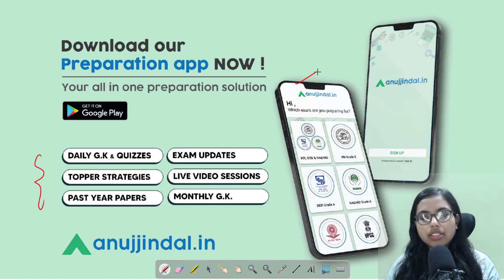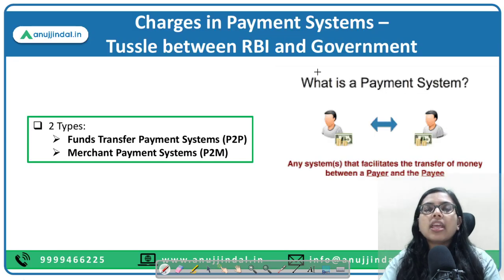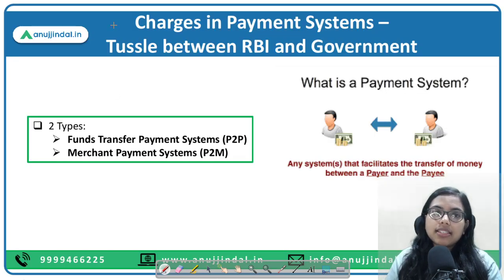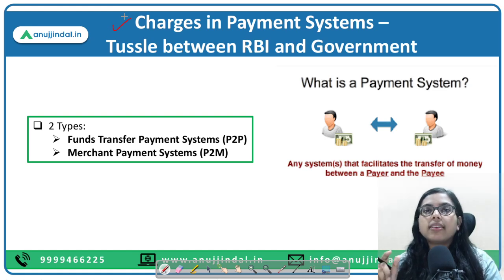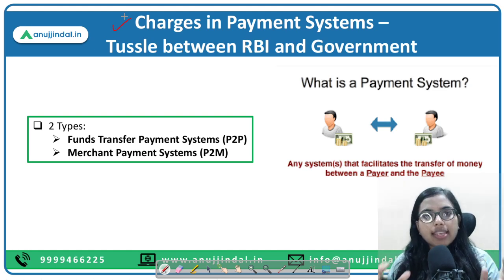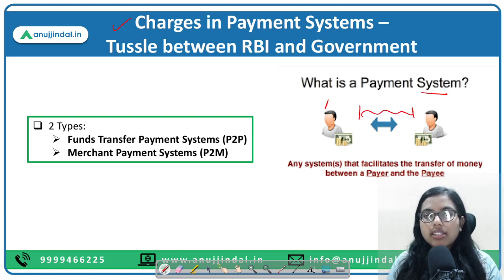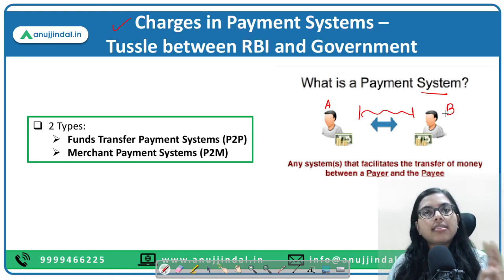Let's get started with charges in payment systems and the tussle between RBI and the government. First, let's understand charges — we want to associate a cost with the payment system. A payment system is anything that facilitates the transfer of money. If any system facilitates the transfer of funds so that you can transfer from A to B, that is known as the payment system.